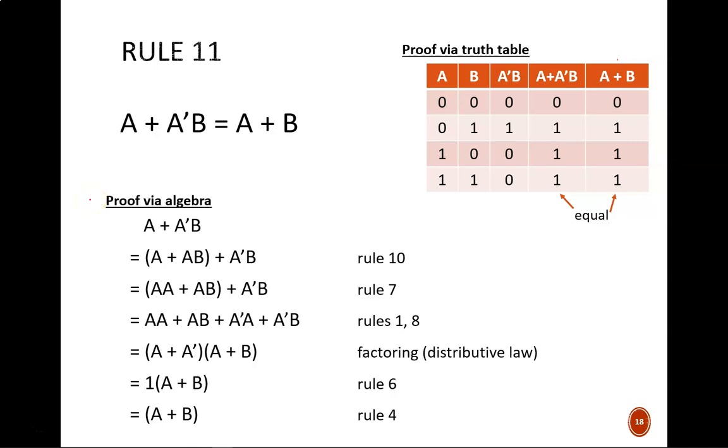We can also prove this through Boolean algebra. This one is a bit trickier and involves working in a non-simplifying direction at first. Through rule 10, we can expand A to read A or AB. Next, through rule 7, we can expand A to read A and A.